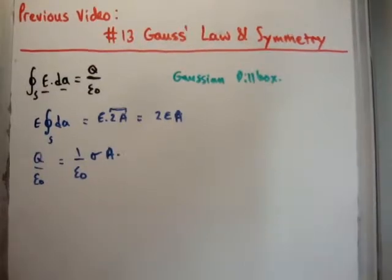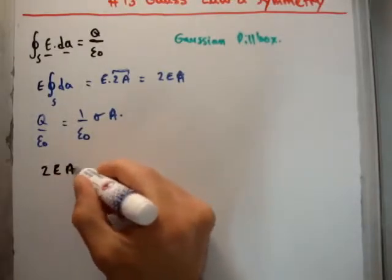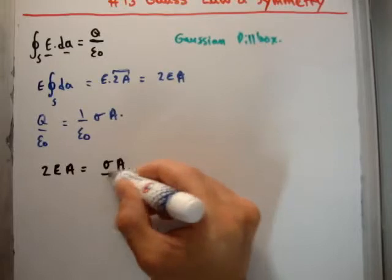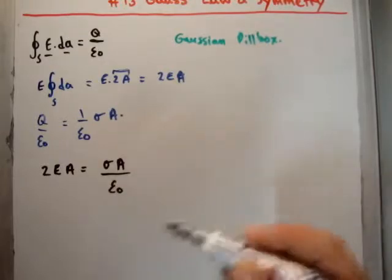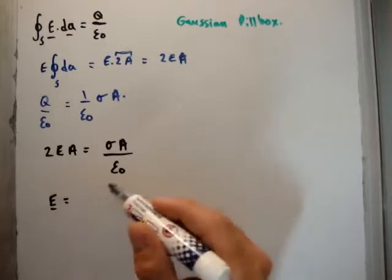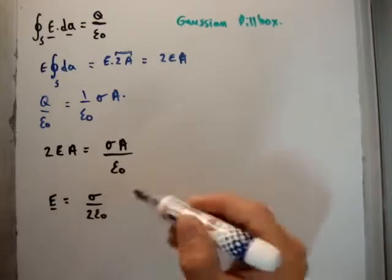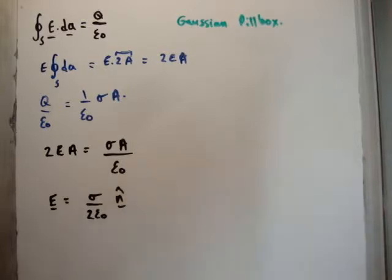So if we put it all together, what we get is as follows. We get twice the electric field times the area of our pillbox is sigma times the area of our pillbox over epsilon 0. Or we can write the electric field as equal to sigma over twice epsilon 0. And we said earlier on that it's in the normal direction to our plane. So we get sigma over twice epsilon 0 in the n hat direction is our electric field.